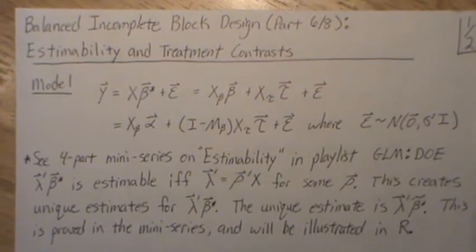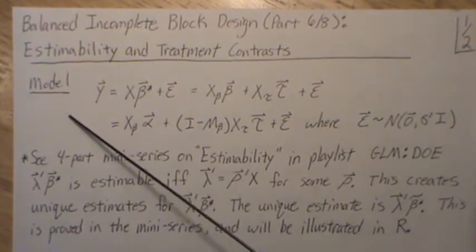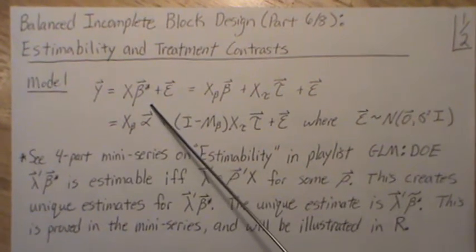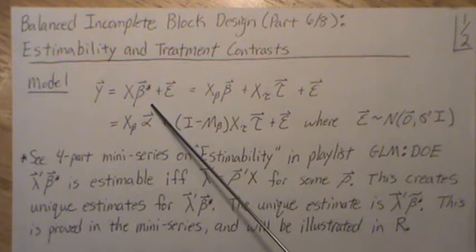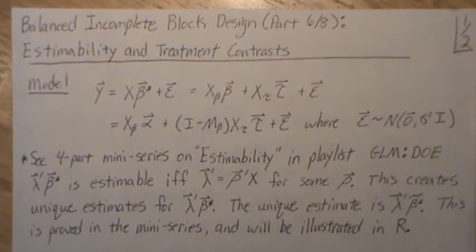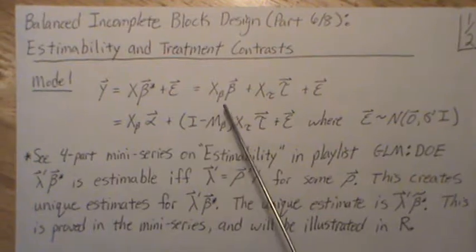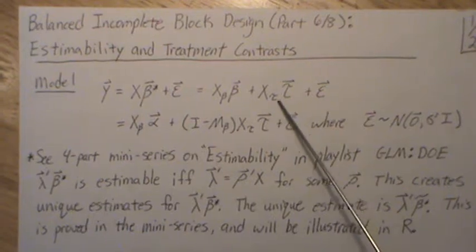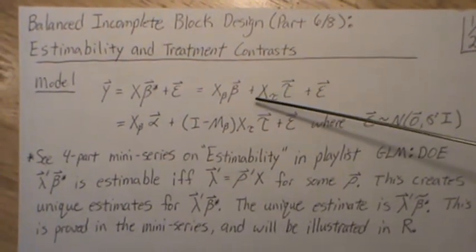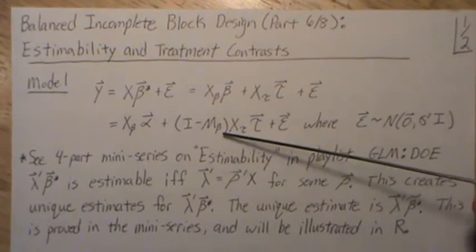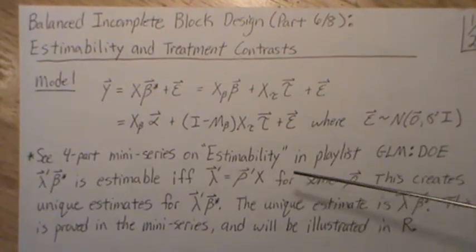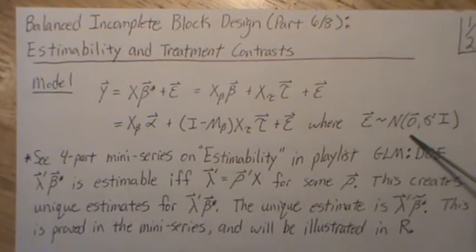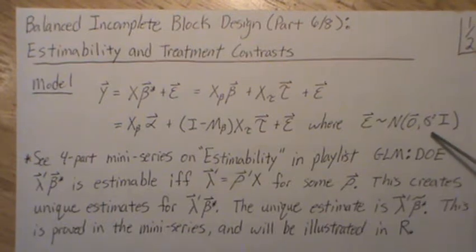Here we're going to look at estimability and treatment contrast. As a reminder, our model is Y equals X beta plus error. From part two of this mini series on the column space of the design matrix, we partitioned it into X_beta, which deals with the block effects, and X_tau, which deals with the tau effects, and then manipulated it further. The error term is multivariate normal with mean vector zero and covariance matrix sigma squared I.